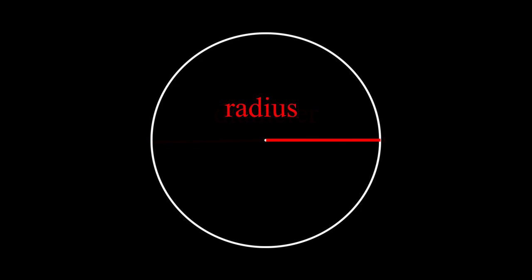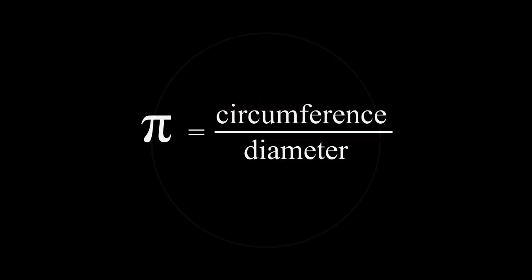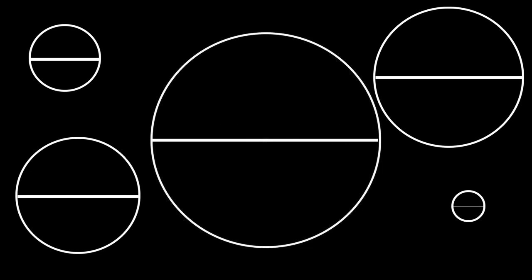The radius of a circle is the distance from the center to the circumference. Dividing the circumference of a circle by the diameter produces a value for pi. This ratio is the same for all circles.